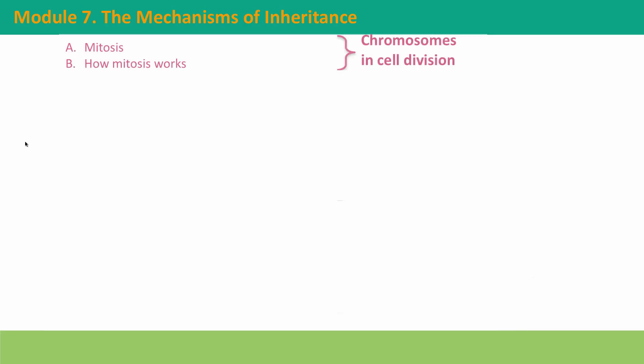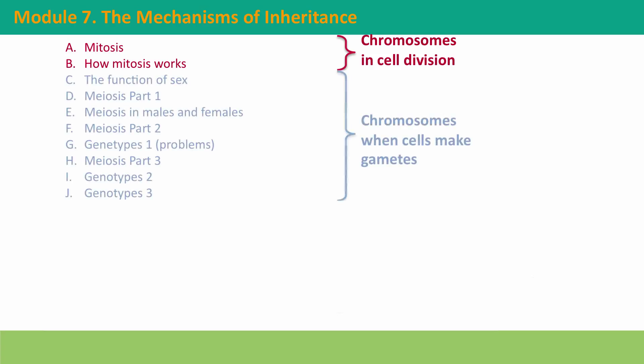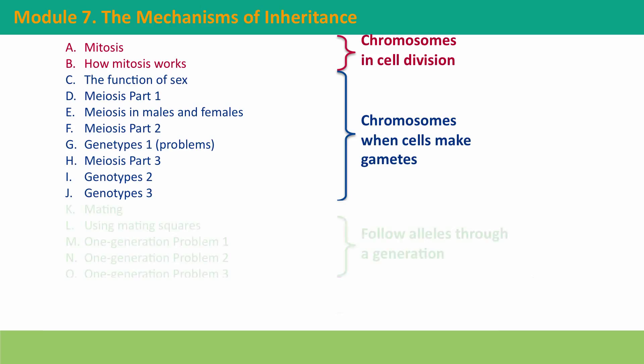We'll start with consideration of the simplest form of inheritance: simple cellular inheritance from one cell to another with the kind of cell division called mitosis. And then we'll build on this understanding for the more complex division called meiosis, which is the division that cells use to make the gametes that pass our genes from one generation to the next.